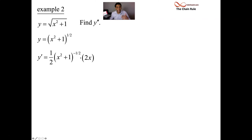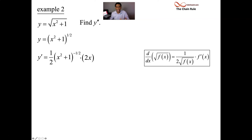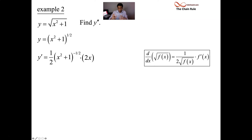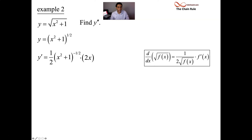In general, if you have the square root of a function, the derivative is one half times that function to the negative one half, times that function's derivative. You can simplify that by putting the negative one half exponent as a root in the denominator. So the shortcut is: if you have the square root of a function, its derivative is 1 over 2 times the square root of that function, times the derivative of the inside function.